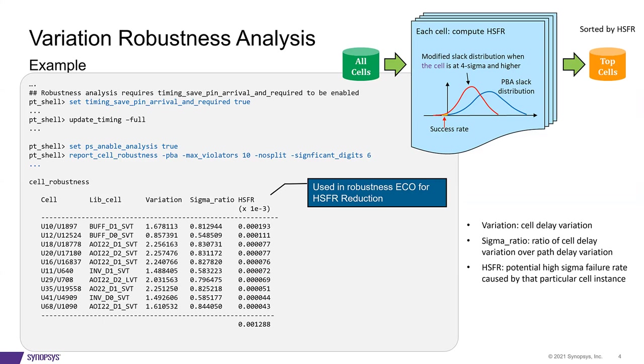Notice the very small yellow area. In this plot, it indicates HSFR. And we compute this for every single cell in the design. And all the cells are sorted based on this HSFR metric. The HSFR of a cell simply means that if a particular cell is at a high sigma, what's the likelihood that the design will fail? The HSFR of a cell is a single event. When a particular cell is at 4 sigma or above, and the rest of the cells on the path are at 3 sigma, then what is the expected success rate loss?